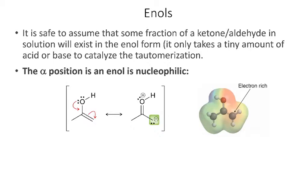It's safe to assume that any time you have an aldehyde or ketone in solution, at least a tiny amount exists in the enol form. Only an extremely small amount of acid or base is needed to catalyze tautomerization — even trace amounts adhering to glassware are sufficient. We almost always have enol present, and this is important because the enol form is generally more reactive. Specifically, in the enol form the alpha carbon is nucleophilic, as shown by its resonance structures where a lone pair resides on that carbon, enabling nucleophilic attack.